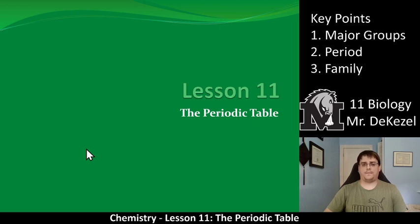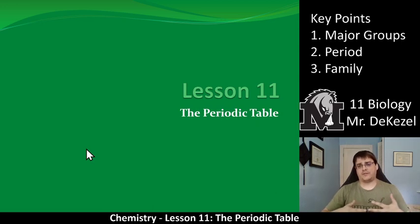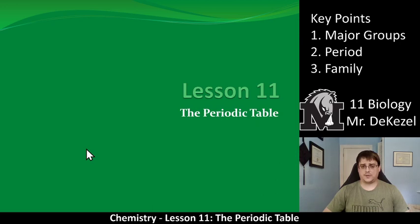If you remember, each row in the periodic table represented an increase in the energy shells or energy levels. So the third row had three energy levels and the fourth row had four energy levels. You'll also remember that each column represented elements that had the same number of valence electrons in them. So five valence electrons was in column 15 and six valence electrons was in column 16. We're going to talk more about these families, as we call them — columns we call families.